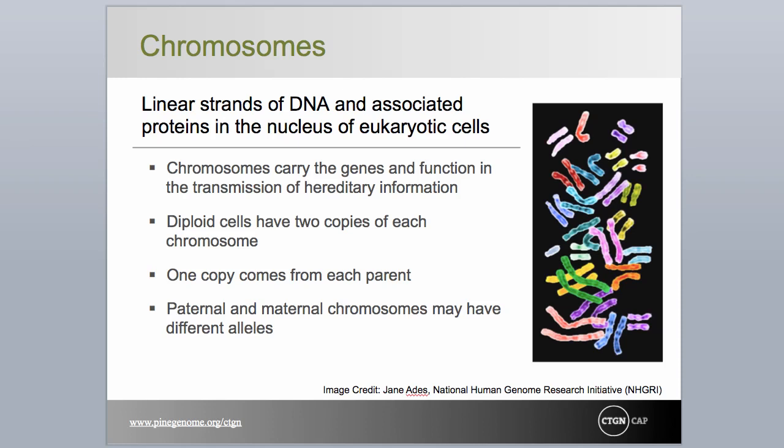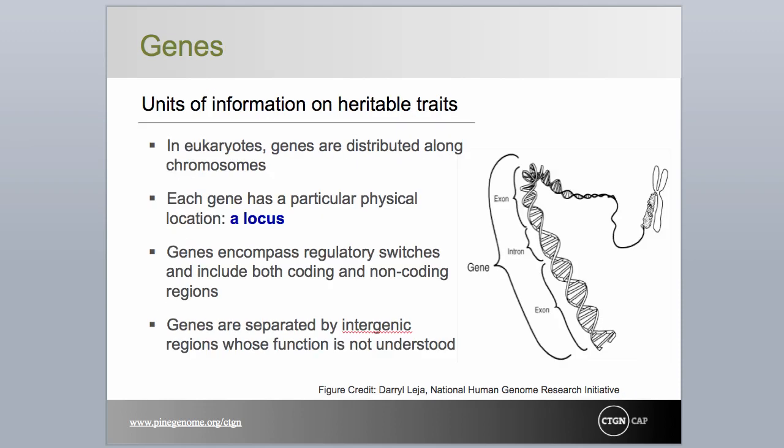Most conifers have 12 sets of chromosomes. Mendel is credited with the discovery of genes, which he described as hereditary factors in 1866. Thomas Hunt Morgan, working with fruit flies, developed the gene theory in 1910, which included the principle of linkage and distribution of genes along the chromosomes. In 1950, Erwin Chargaff identified the one-to-one relationship of DNA bases, followed soon thereafter by Watson and Crick's discovery of the three-dimensional structure of DNA.